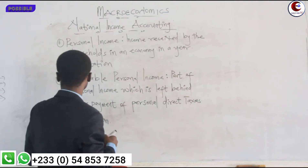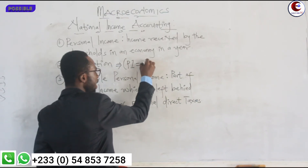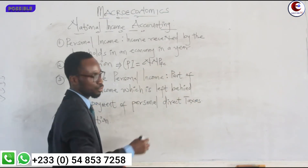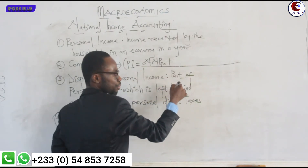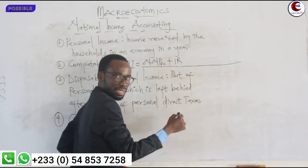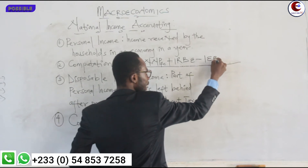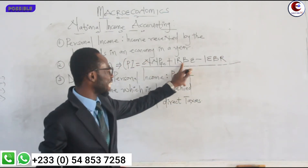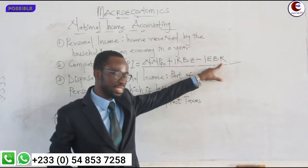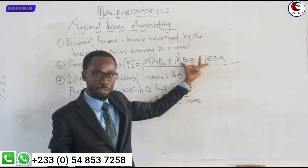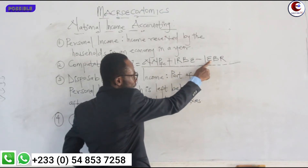So the formula on the board: Personal income = NNP at factor cost, plus income received but not earned, minus income earned but not received. Please write them in full in exams. So we are adding income received but not earned, and subtracting income earned but not received.